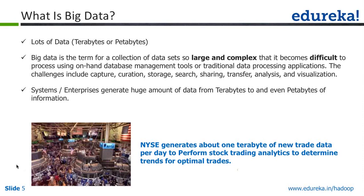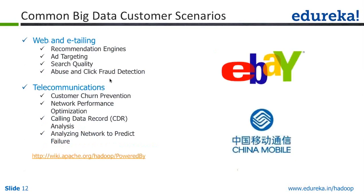The data we deal with in big data is mostly unstructured data. Looking at some big data customer scenarios: eBay, for example, is using a lot of it in web and e-tailing. On eBay you'll see recommendation engines which say 'people who bought this also bought this.' If you try to check out something from eBay or Flipkart, it will suggest associated items. That recommendation engine is built using big data analytics — Mahout is the tool used for building recommender systems.